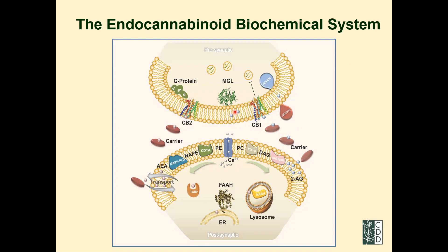Once these molecules do their job activating receptors, they need to be deactivated. Two key enzymes operate there: fatty acid amide hydrolase (FAAH), which deactivates anandamide, present postsynaptically; and monoacylglycerol lipase (MGL) in the presynaptic cleft, which deactivates 2-arachidonylglycerol. Additionally, there is a transporter that can take cannabinoids from inside the cell to the outside, providing another way of eliminating them.